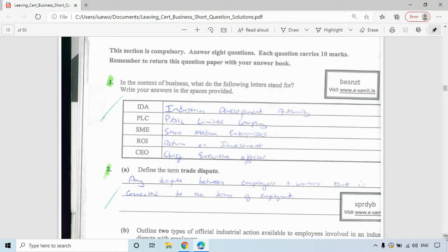IDA is Industrial Development Authority, PLC is Public Limited Company, SME is Small and Medium Enterprises, ROI is Return on Investment, and CEO is Chief Executive Officer.